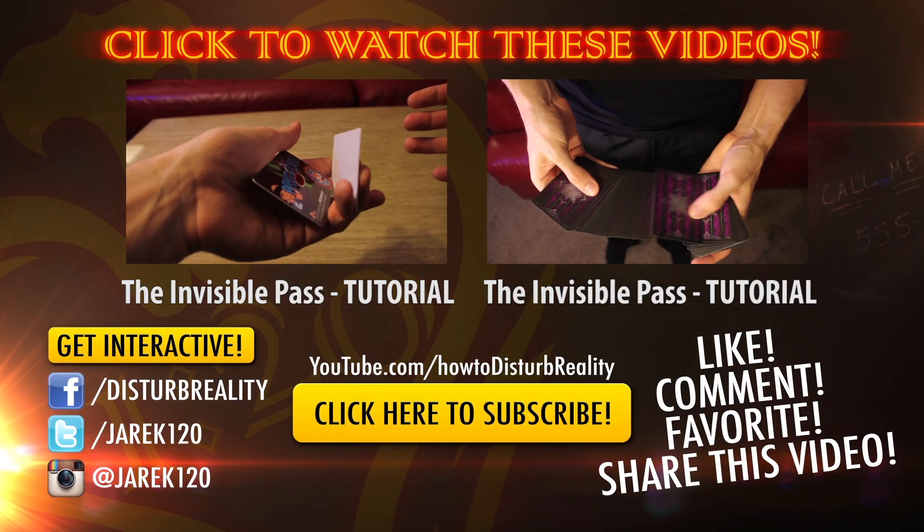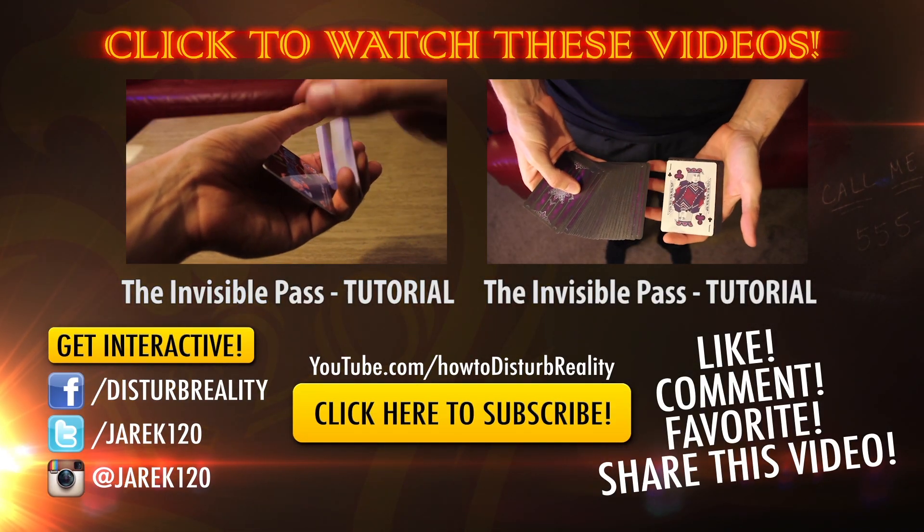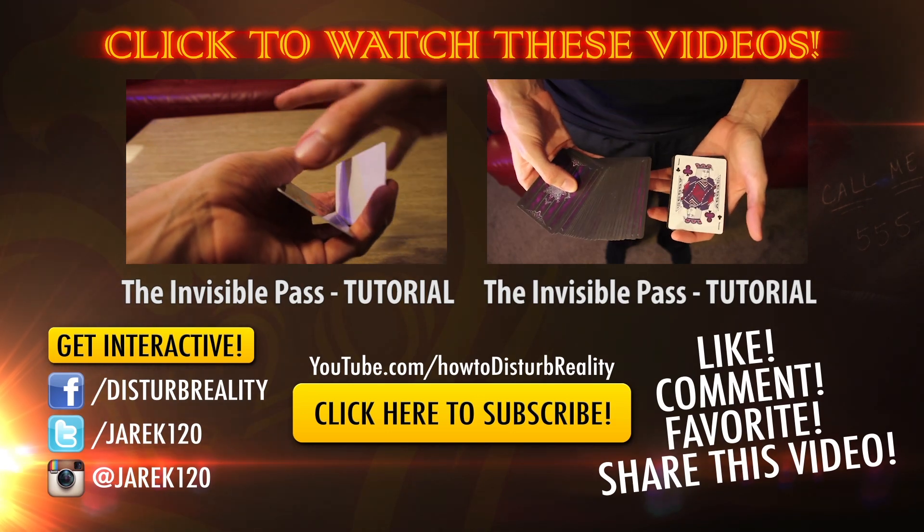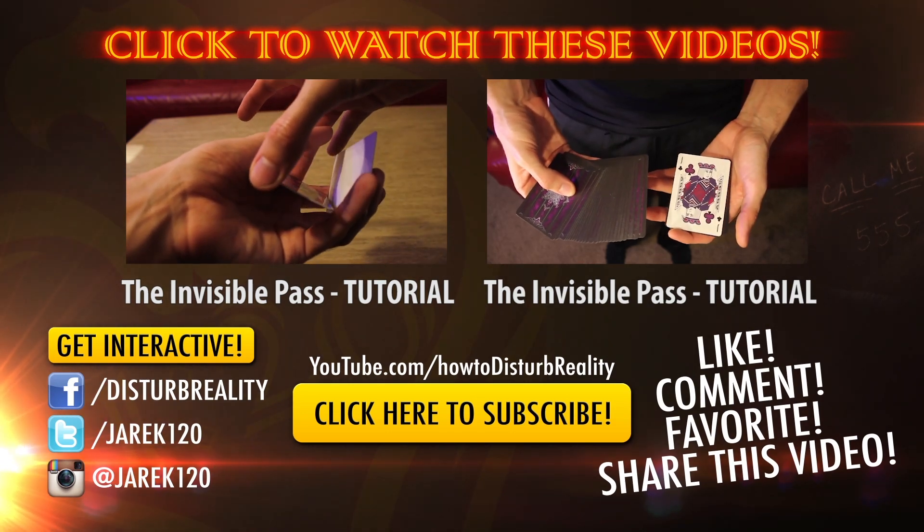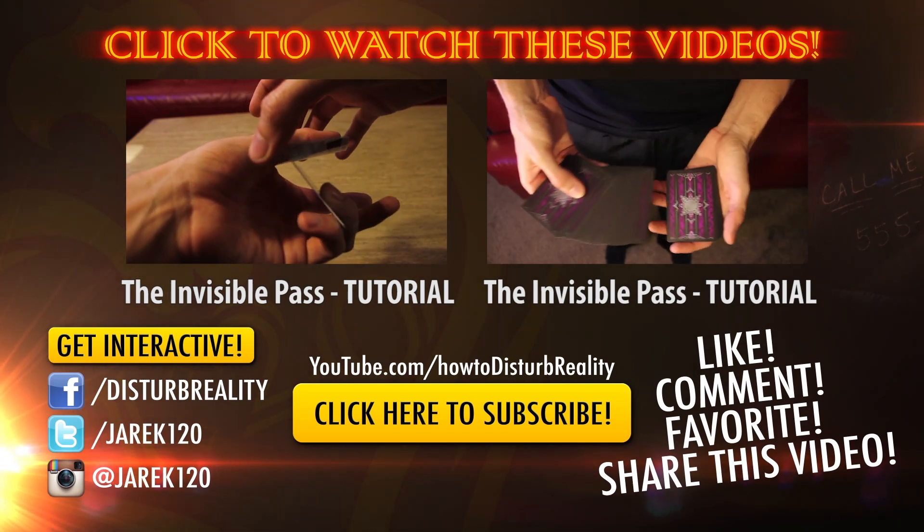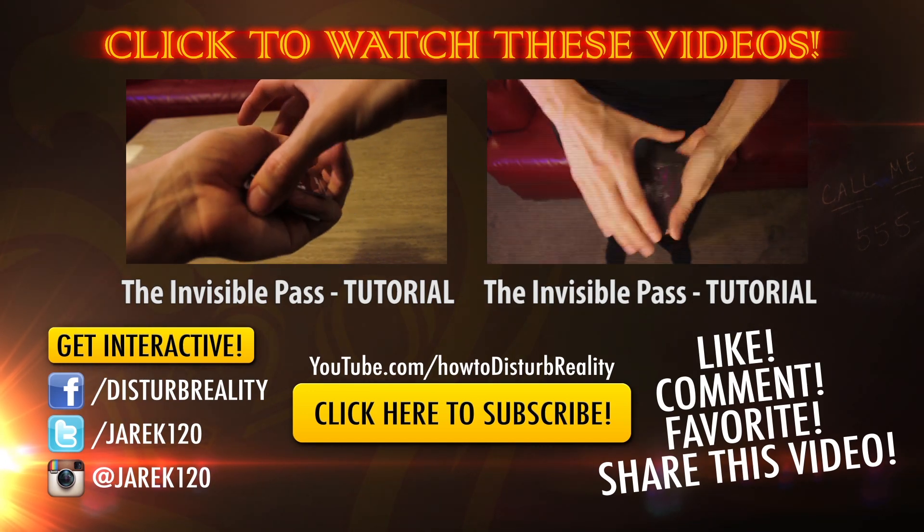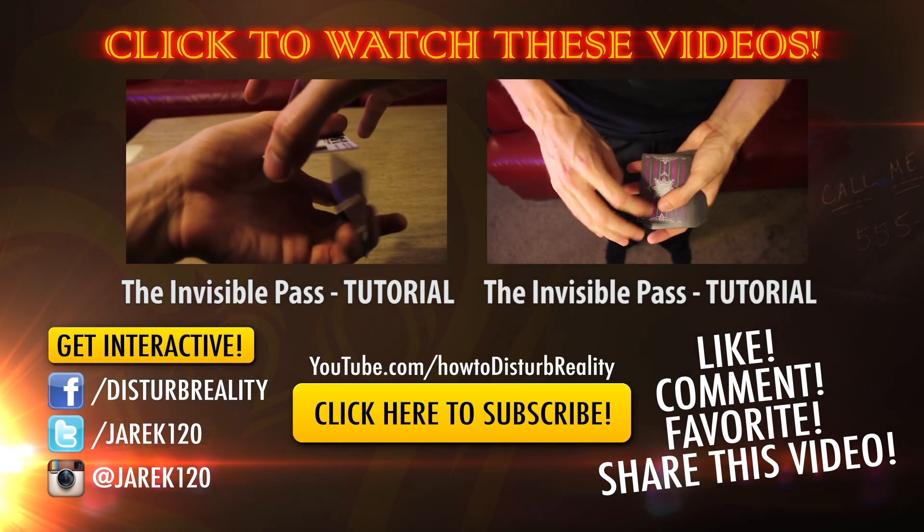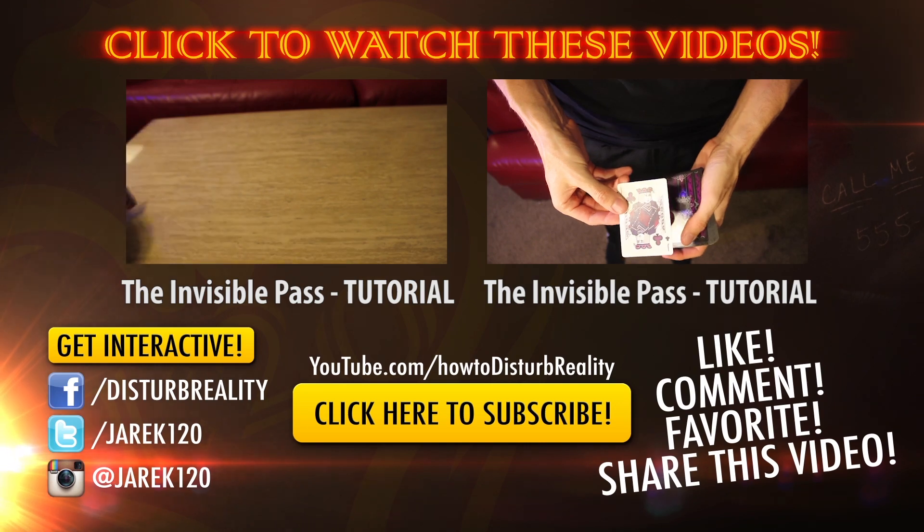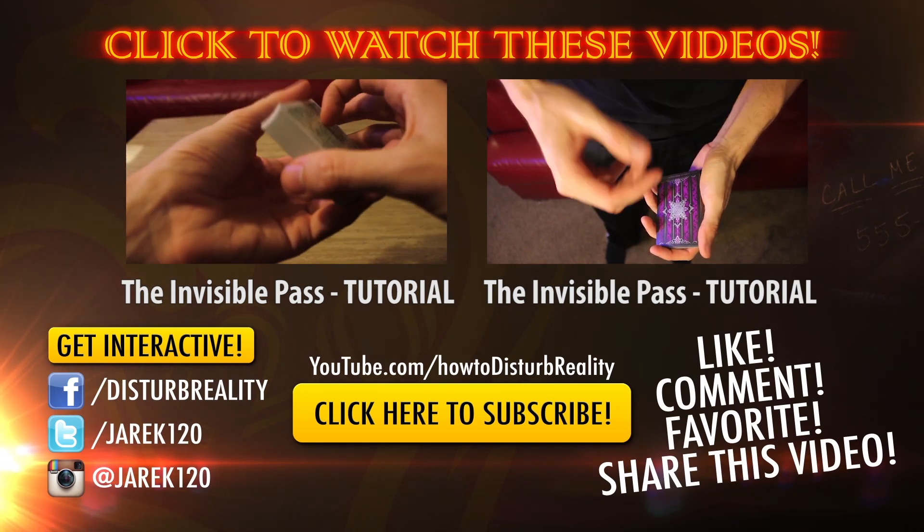These hands are lifting it up. My thumb is over it. These fingers come to the corner. Pop that up. And now, we're going to upgrade the series and start to learn the elements that make the pass invisible. Starting with the invisible pass. Let's learn how to do it.